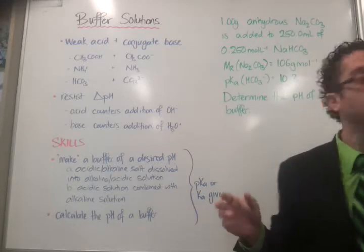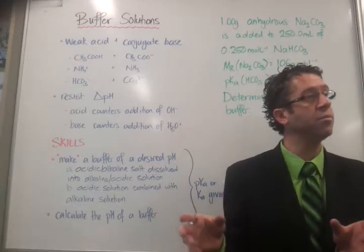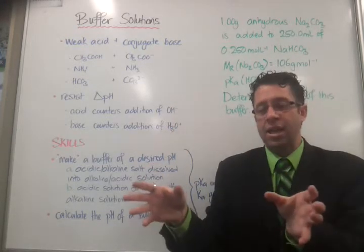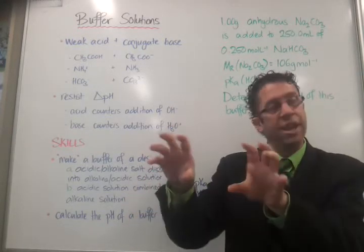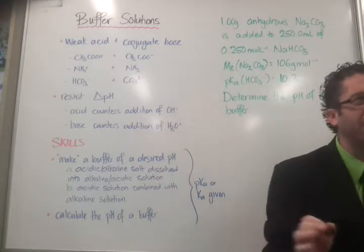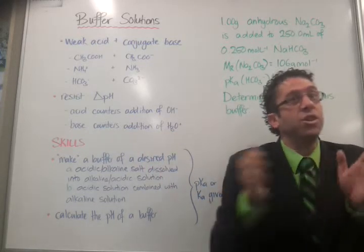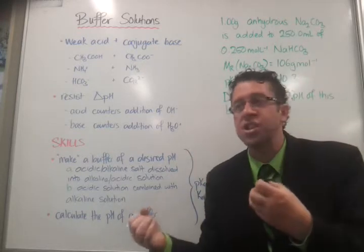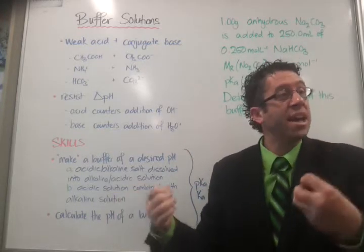You could have two solutions of known concentration, one of the base, one of the conjugate acid, or conjugate acid and base, put together. And they're a bit trickier, because you have to allow for the fact there's a new total volume, so actually the concentration of the two, the base and the acid, is being reduced.